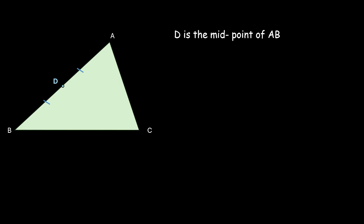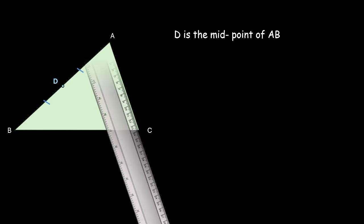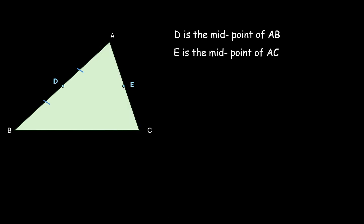Let us also measure side AC. It is 14 centimetres and its midpoint will lie at 7 centimetres. Let's call it E. E is the midpoint of AC, so AE is equal to EC. Now let's join the two midpoints.